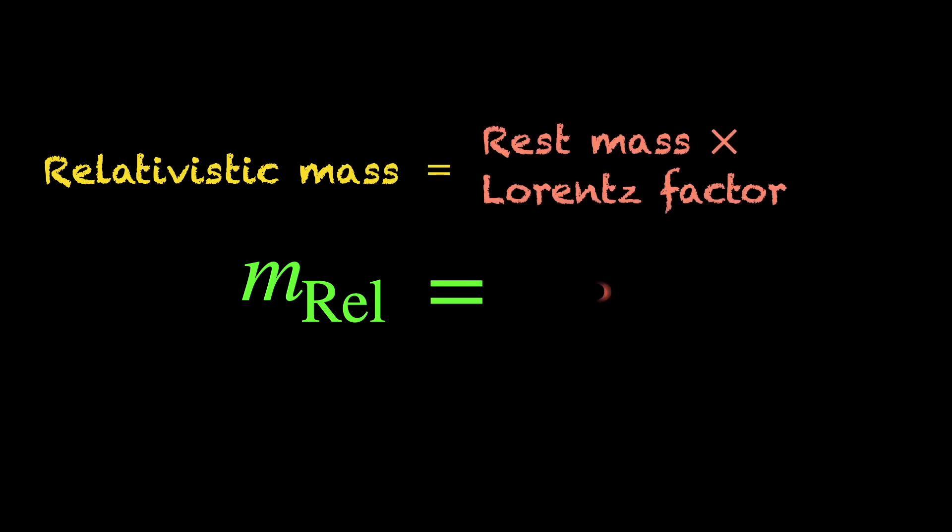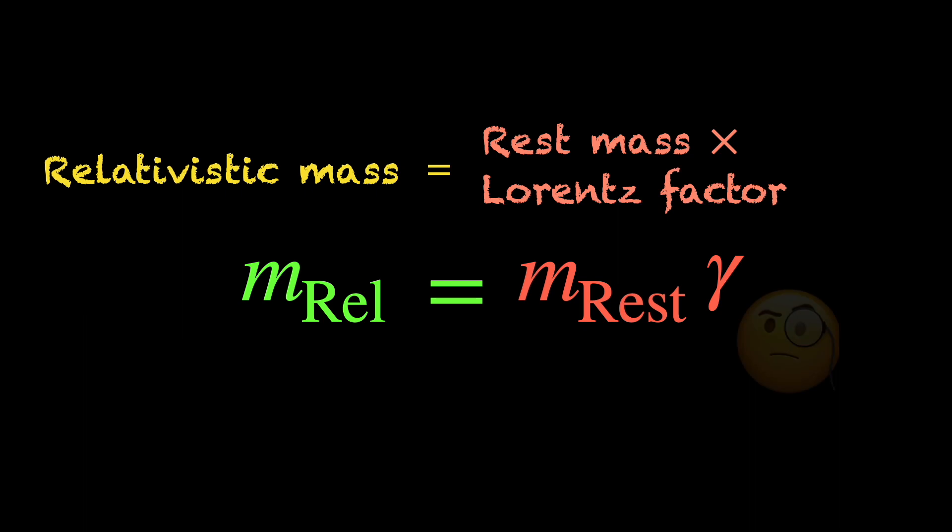the relativistic mass or velocity-dependent mass is the rest mass times the Lorentz factor. What is this Lorentz factor? Where does it come from? Its physical significance?